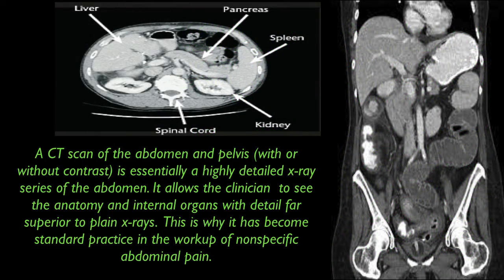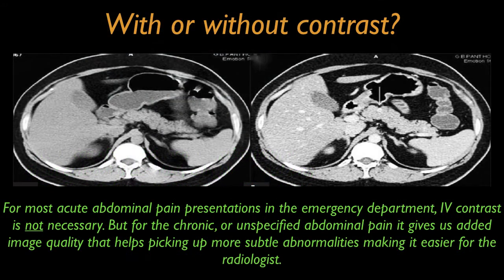The CT scan of the abdomen and pelvis, with or without contrast, is essentially a highly detailed x-ray series of the abdomen. It allows the clinician to see the anatomy of internal organs with great detail, far superior to plain x-rays, which is why it has become standard practice in the workup of non-specific abdominal pain. For most acute abdominal pain presentations in the emergency department, IV contrast is not necessary. But for chronic or unspecified abdominal pains, it gives added image quality that helps pick up more subtle abnormalities, making it easier for the radiologist and clinician to make the right diagnosis.